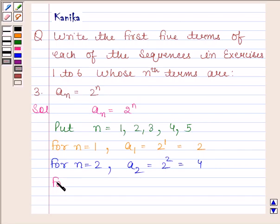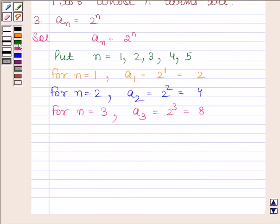For n = 3, a3 = 2^3 = 8. For n = 4, a4 = 2^4 = 16.